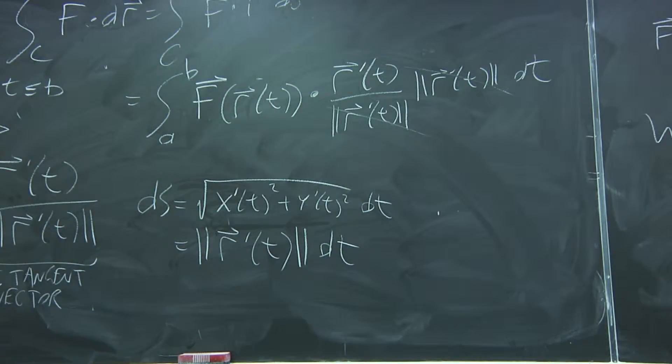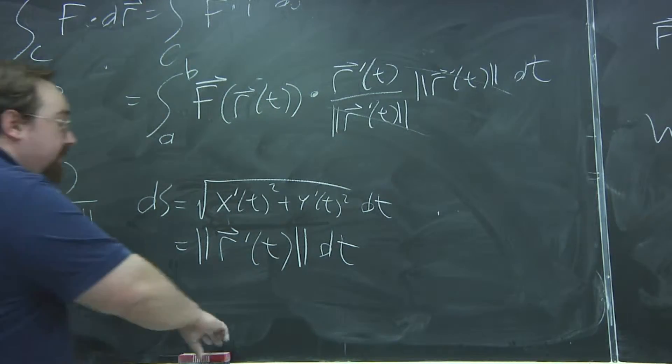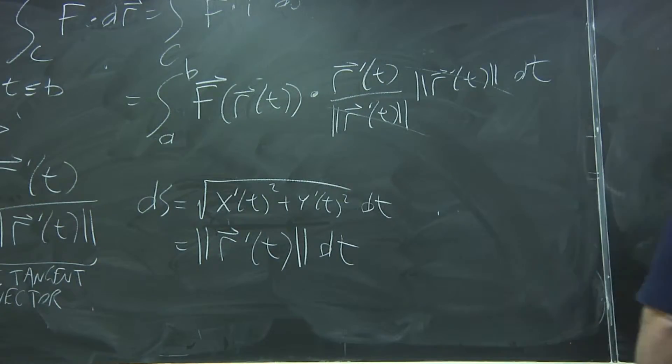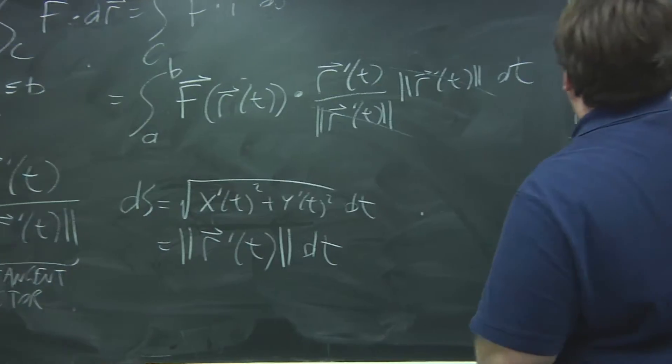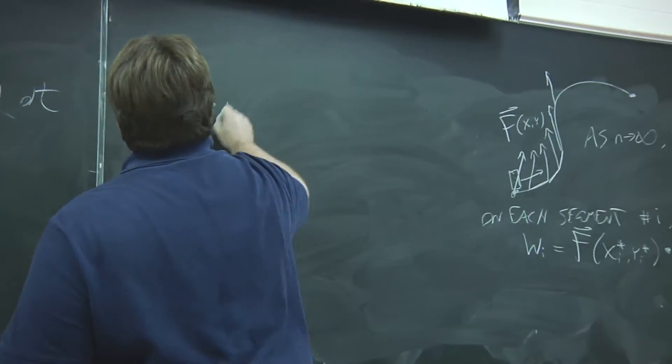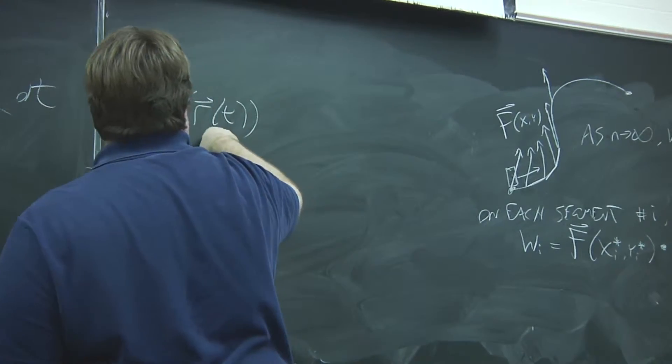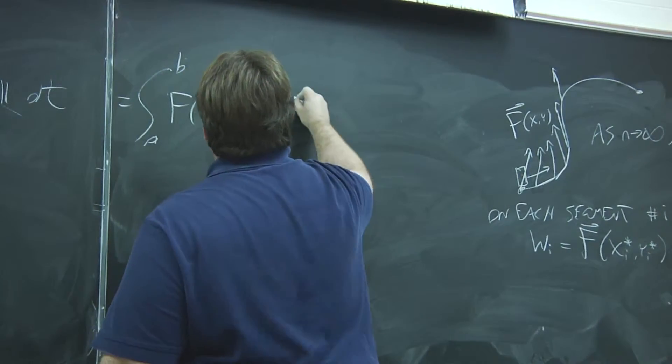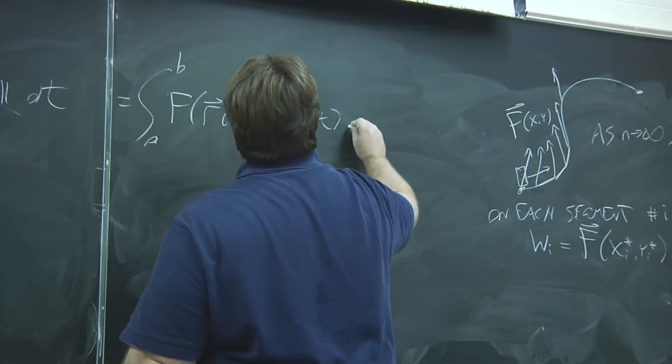So now we have this line integral of a vector field in a form where we can evaluate it. It's just going to be going from a to b, f evaluated at your x of t, y of t, and z of t if you have it, dotted with its derivative, dt.